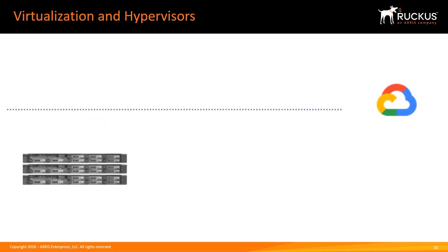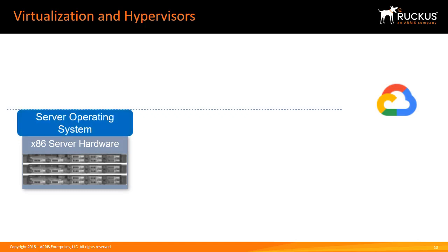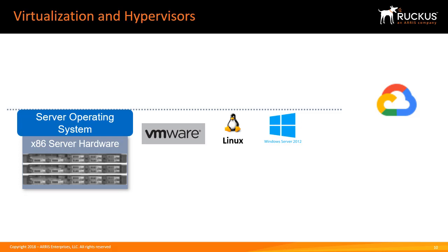Virtual SmartZone uses a virtual machine hosted on an x86 server instead of a dedicated physical hardware appliance. A virtual infrastructure begins with server hardware. An operating system capable of running virtualization is installed onto the server. At the time this course was created, the supported options are VMware, Linux, and Microsoft Windows Server. Once an operating system is in place, a hypervisor needs to be installed.